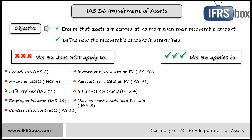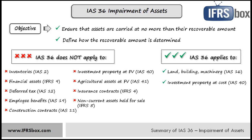Assets arising from construction contracts — look to IAS 11; investment property carried at fair value — that's IAS 40; agriculture assets carried at fair value — that's IAS 41; insurance contracts — IFRS 4; non-current assets held for sale — that's IFRS 5. These are assets that IAS 36 does not apply to, and the list is quite extensive. For what assets do you need to use IAS 36? Land, buildings, machinery — all in line with IAS 16. Also investment property carried at cost, intangible assets under IAS 38, goodwill, and investments in subsidiaries, associates and joint ventures carried at cost.